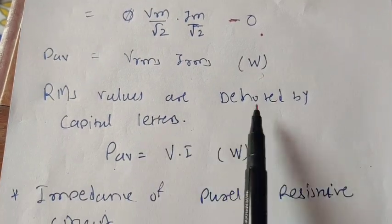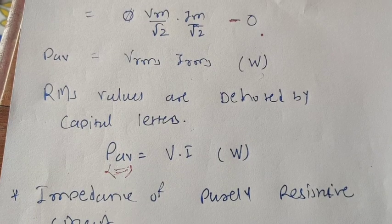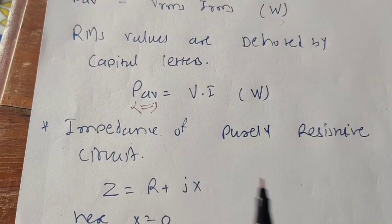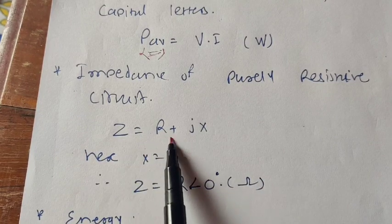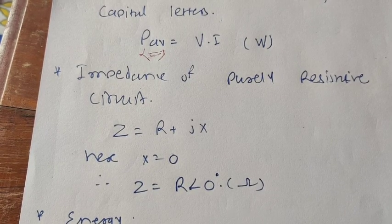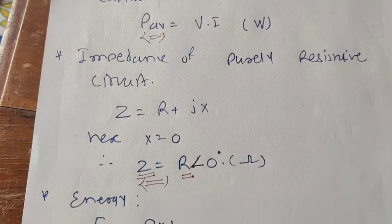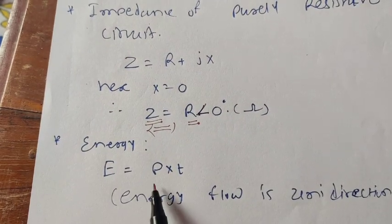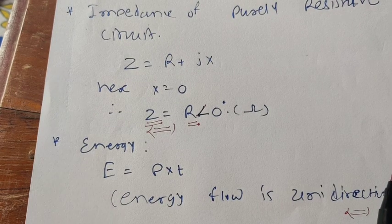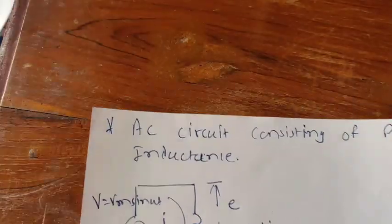The average power is P = Vrms × Irms watts. For a purely resistive AC circuit, P = VI watts. The impedance of a purely resistive circuit is Z = R + jX, where X = 0 because there is no inductor and no capacitor, so Z = R with a phase angle of zero. Energy E = P × T, and energy flow is always unidirectional in a purely resistive AC circuit.